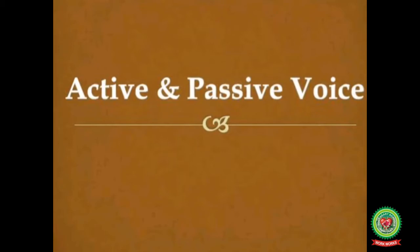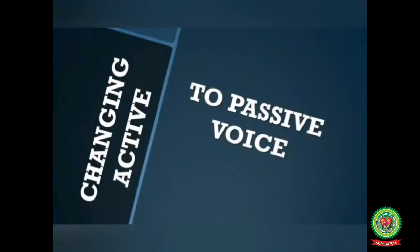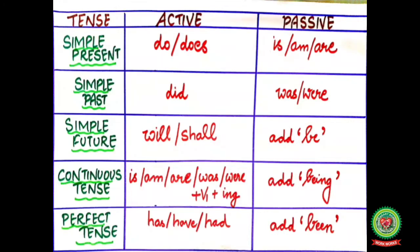Good morning children. Today in this video we are going to discuss further rules of active to passive voice for interrogative sentences. In the previous video we had already discussed the rules for active and passive voice interrogative for simple present, simple past, and simple future. Now we will discuss the rules for continuous and perfect tense. Before starting, we will first revise our previous rules: if your active voice interrogative sentence is given in simple present tense, then 'do' and 'does' will be replaced by 'is', 'am', or 'are'. If a question is given in simple past tense, then 'did' will be replaced by 'was' or 'were'. For active voice interrogative simple future tense, we will add the word 'be' in your passive voice. Now we will discuss the further rules.